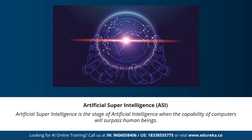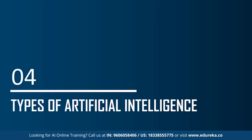Moving on to the last stage: artificial super intelligence. This is the stage of AI when the capability of computers will surpass human beings. Artificial super intelligence is currently seen as a hypothetical situation, as depicted in movies and science fiction books — machines taking over the world. Such systems don't currently exist; we don't have any machine capable of thinking or reasoning better than a human being. Artificial super intelligence refers to any system that is much smarter than humans.